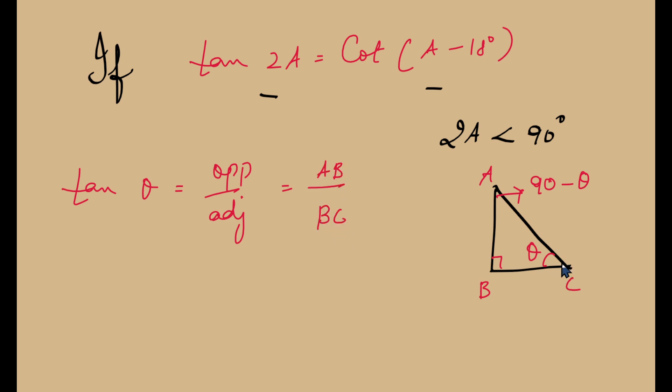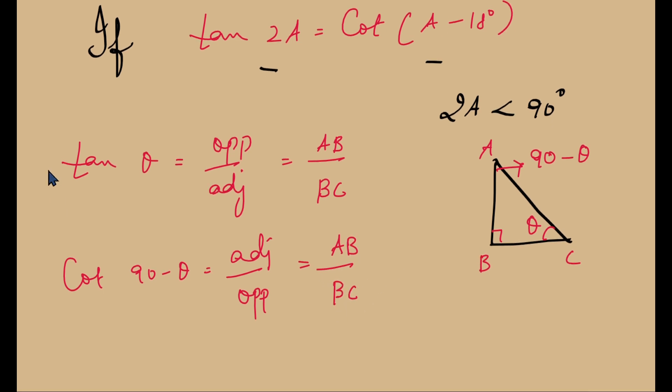And now, what is cot of 90 minus theta? Cot of 90 minus theta is equal to the adjacent by opposite, the adjacent side to 90 minus theta divided by the length of the opposite side. The adjacent side to 90 minus theta is AB and the opposite is BC. So in any right angle triangle, we have a relationship between the tan of an angle and the cotangent of its supplementary angle. They are equal.